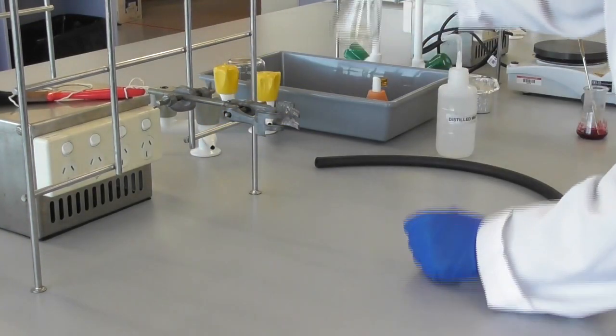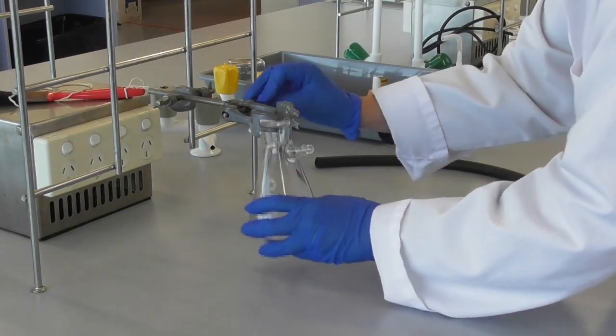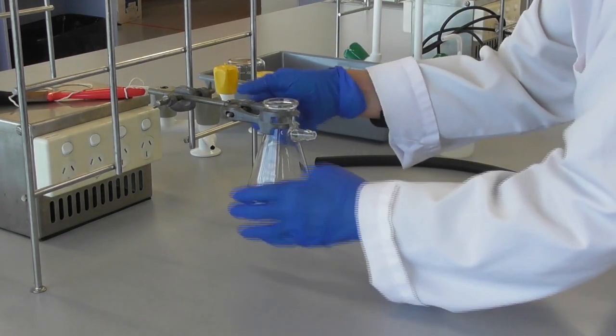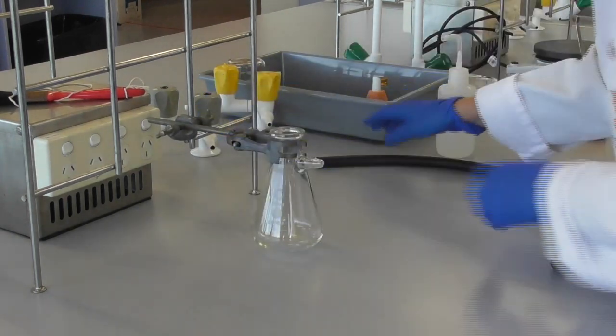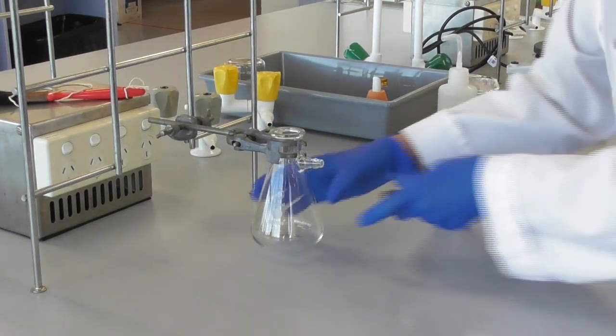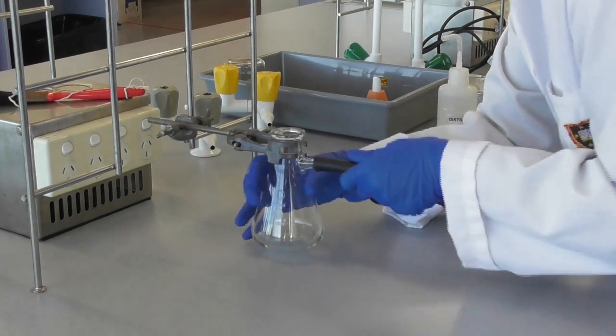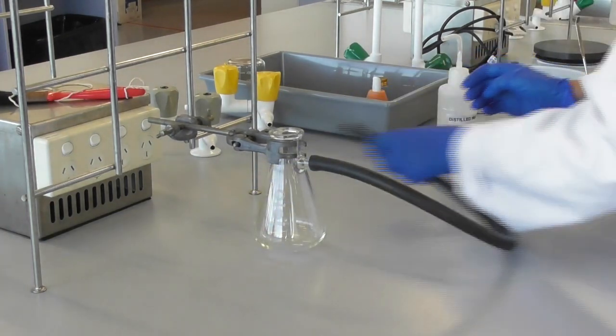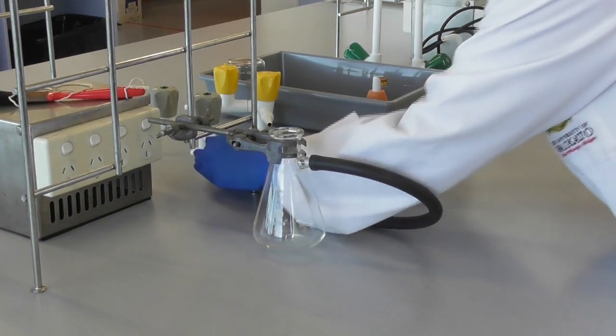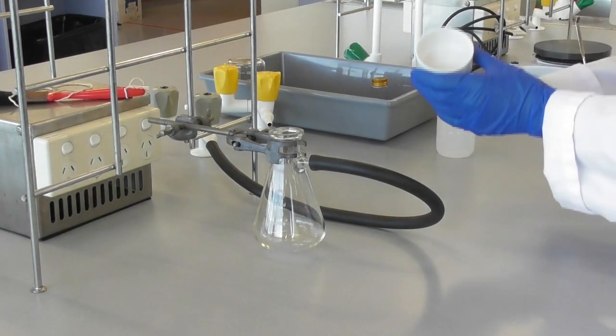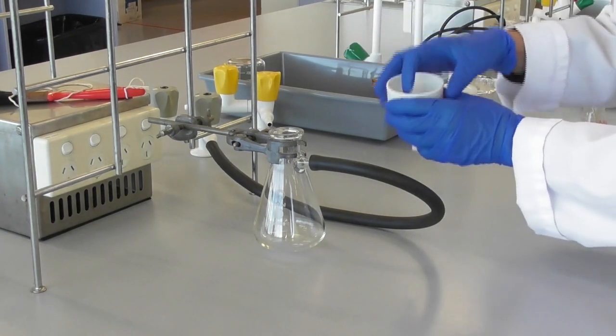While this is happening we can set up the filtration. Clamp a vacuum flask, attach the vacuum hose to the flask and to the vacuum outlet. We add a Buchner funnel with filter paper on top of the vacuum flask.